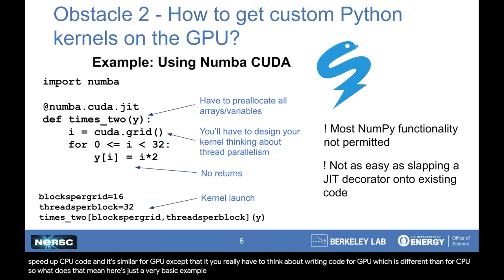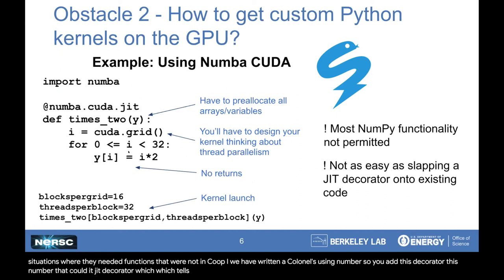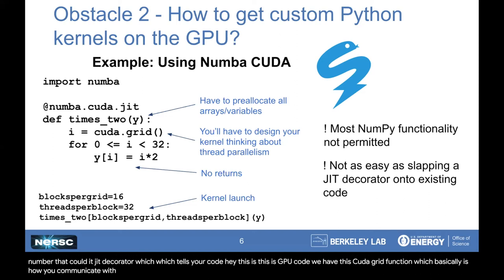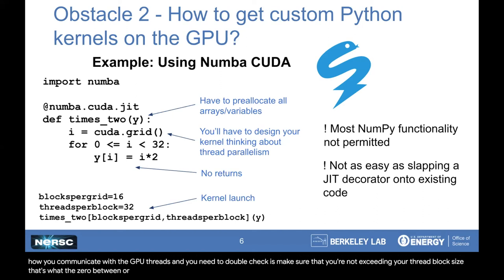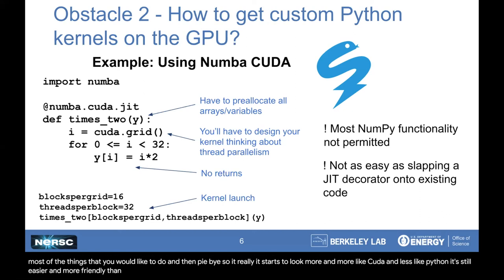Here's just a very basic example of what it looks like to use Numba, and this is what we have done for DESI — in situations where they needed functions that were not in CuPy, we have written kernels using Numba. You add this numba.cuda.jit decorator, which tells your code this is GPU code. We have this CUDA grid function, which is how you communicate with the GPU threads, and you need to make sure you're not exceeding your thread block size. You can't return anything, you can't allocate any memory — you basically can't do most of the things you would like to do in NumPy. So it starts to look more and more like CUDA and less like Python, but it's still easier and more friendly than some of the other frameworks. This is the option we chose for DESI.